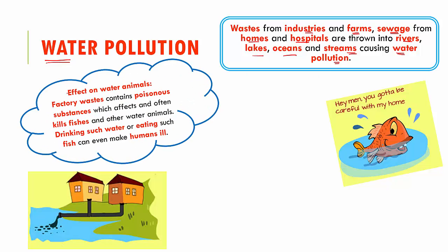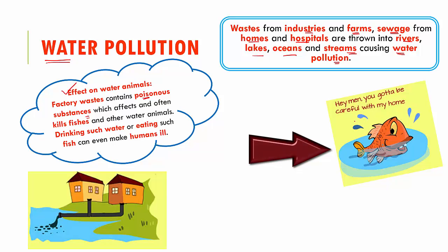When you see water pollution as such, the effect of water pollution on animals that live inside water is huge because the factory wastes contain poisonous substances which will affect and often lead to the death of fishes and other animals that live inside water. This fish is actually crying for help, telling us to be careful with its home.